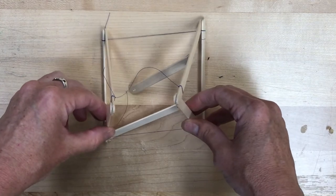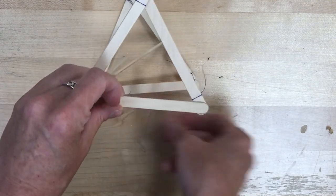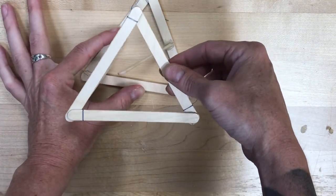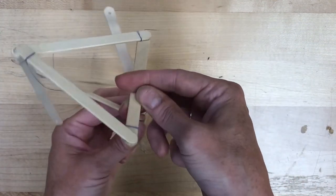I'm going to take a long length of thread and I'm going to tie it through the hole on the popsicle stick that is coming up from the bottom.